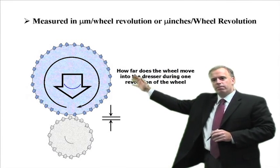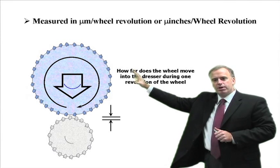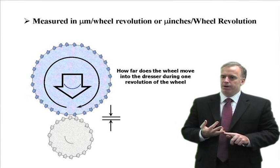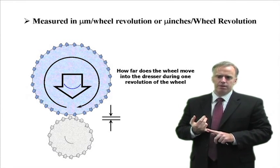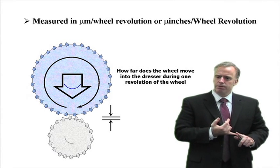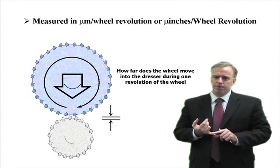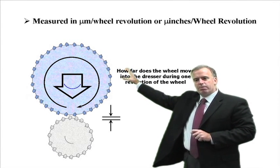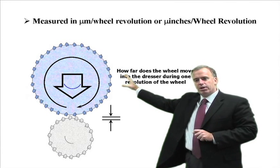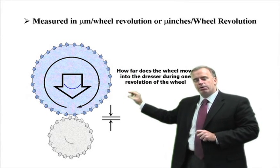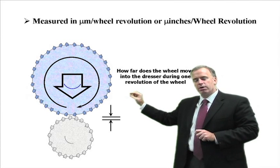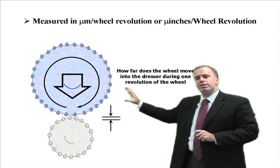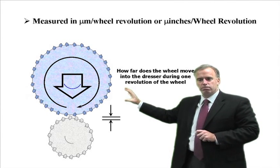As we grind the workpiece, the dressing diamond plunges into the wheel. The parameter I'm interested in is not how many millimeters per minute the diamond roll plunges, but how many microns per revolution. Every time that wheel makes one revolution, how far has that diamond roll moved into the wheel?